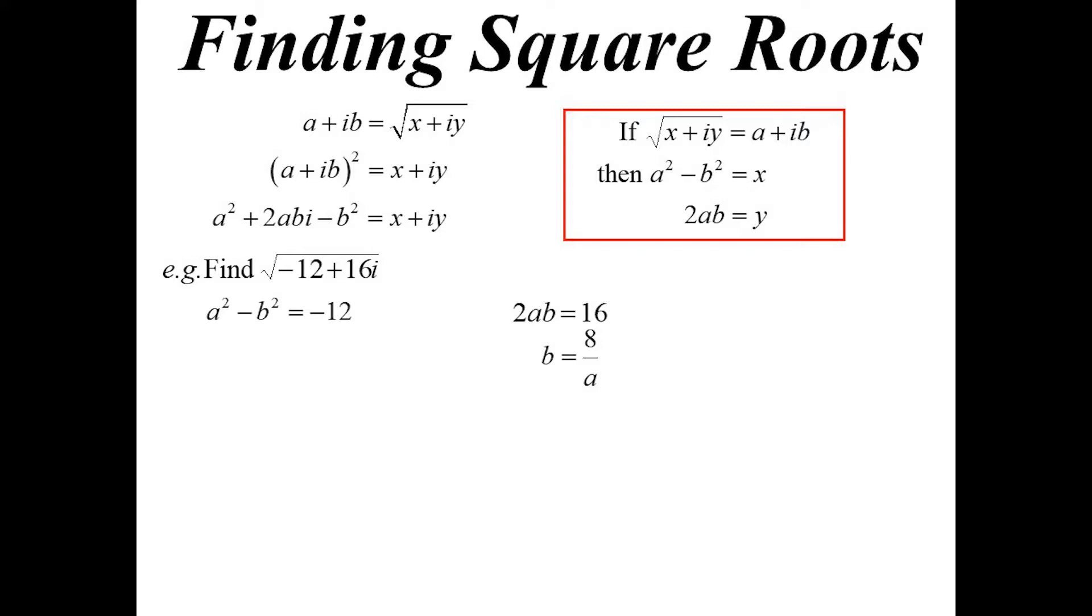And 2AB will be the imaginary part. Two equations, two pronumerals, should be able to find them. So B is equal to 8 on A. Sub that into the other one. Let's get rid of the fraction, multiply everything by A squared. I get a quartic.